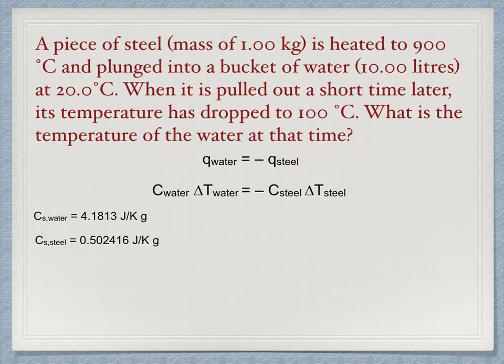Now the mass of the steel is easy. It is given in the problem, one kilogram. But the water is given in the problem as a volume rather than a mass. What do we need to know about water to turn the volume into a mass? Well, the property of density is what we need. We look it up and find that for water the density at 25 Celsius is 0.99705 grams per milliliter.